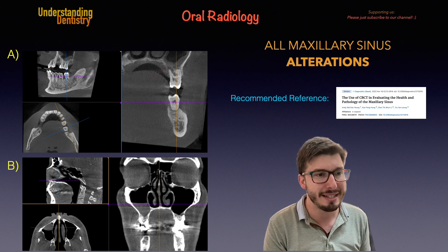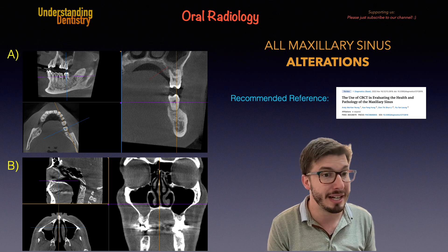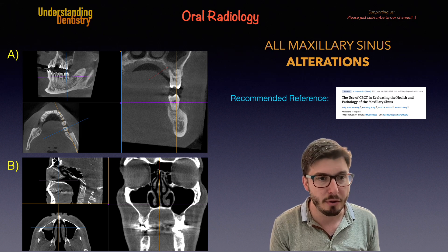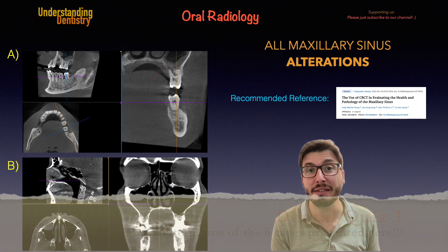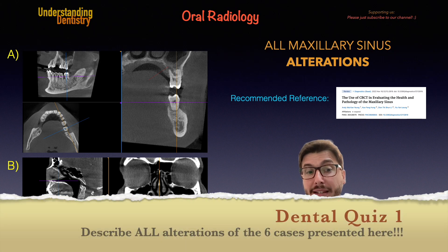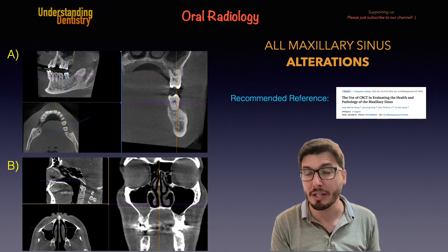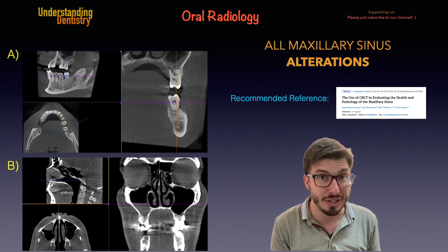So without further ado, let's start with the clinical case on the letter A. And then we have a sinus membrane thickening, but now we need to understand if it's tooth-related or not. This is one of the most important questions that we need to make when we are diagnosing the maxillary sinus alterations.